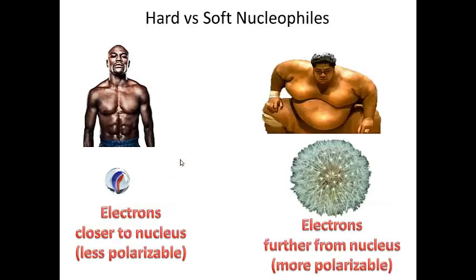Let's talk about hard and soft nucleophiles using an analogy. A hard nucleophile is like Floyd Mayweather — small, densely charged, very muscular, comparable to a marble. In a hard nucleophile, electrons are closer to the nucleus, less easily disturbed, and less polarizable. A soft nucleophile is like a sumo wrestler — much bigger, with electrons further from the nucleus, more easily accessible and more polarizable, comparable to a dandelion.